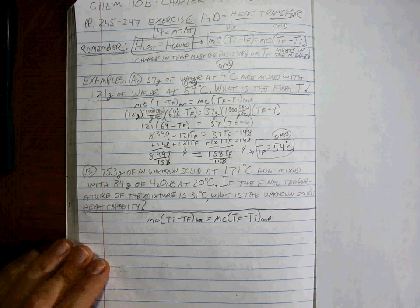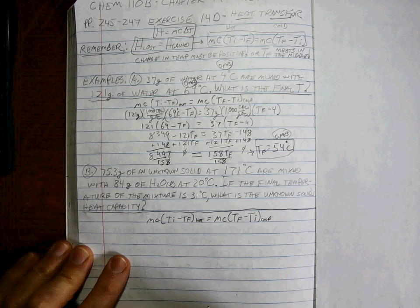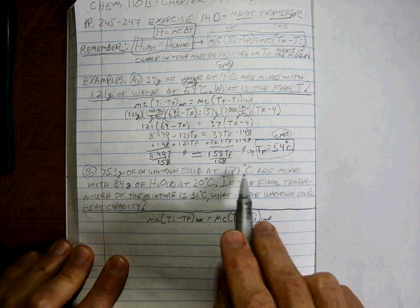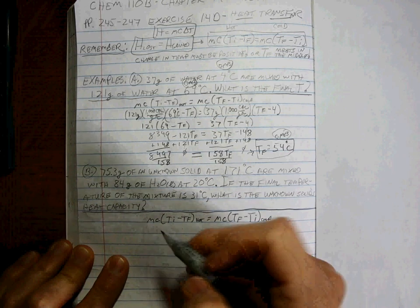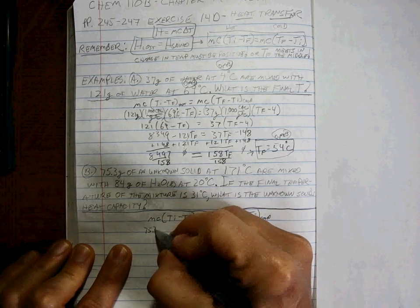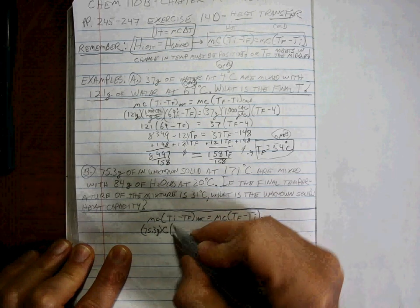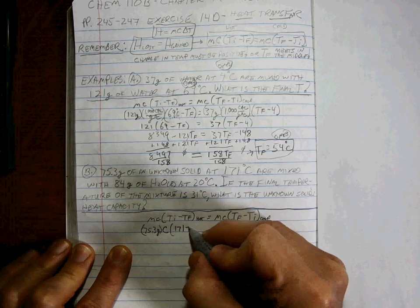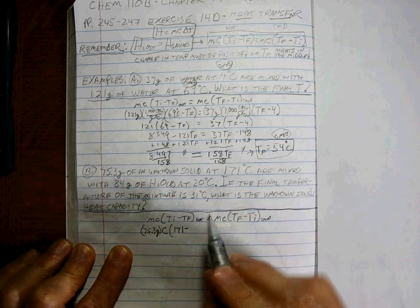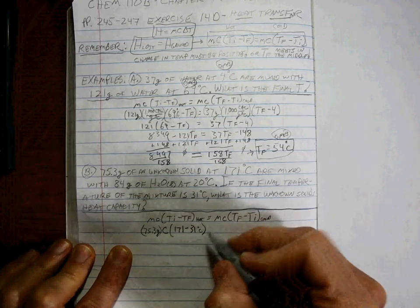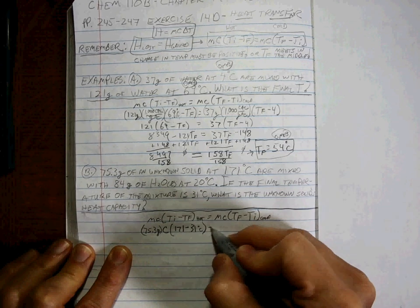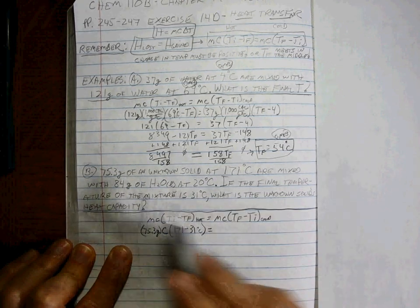Okay, so what do we know? Well, we know that the unknown solid is hot, so 75.3 grams. Don't know what the heat capacity is, but we know the initial temperature was 171 and we know the final temperature is 31. We know the water mass.